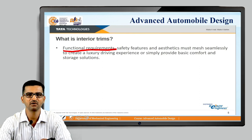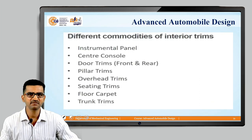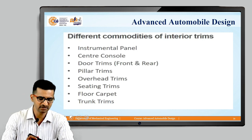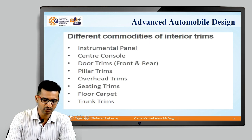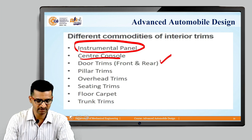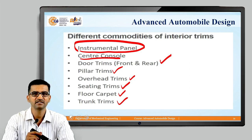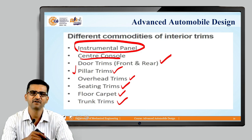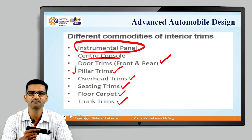Interiors play a very important role in comfort. All three things must be designed simultaneously such that the integration is very smooth, adding to the comfort and luxury of the car. There are various commodities of interior trims: the instrumentation panel, central console, door trims, pillar trims, overhead trims, seating trims, floor carpet, and trunk trims. For example, door trims are all plastic parts connected to the door, and pillar trims are plastic parts on the A, B, and C pillars from inside. The name itself indicates where each part is located.